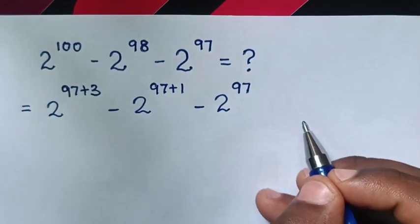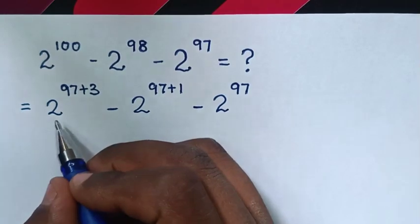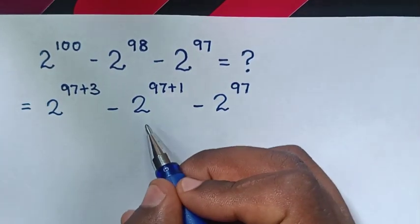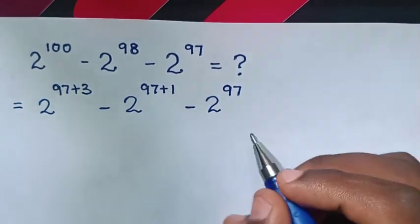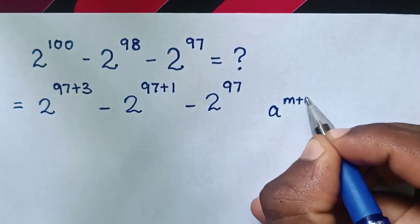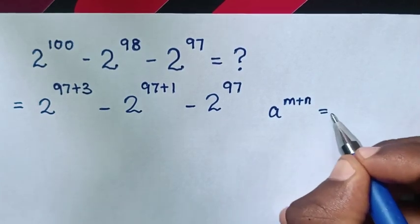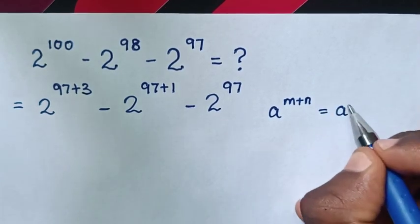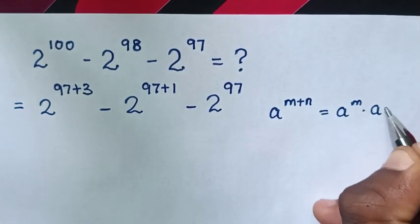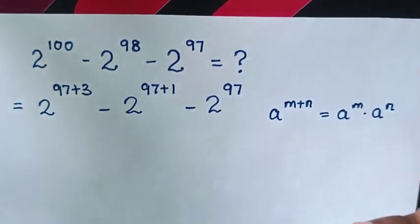Then, in the next step, for exponents with addition of powers, we will apply this exponential rule: a power of m plus n is equal to a power of m times a power of n.